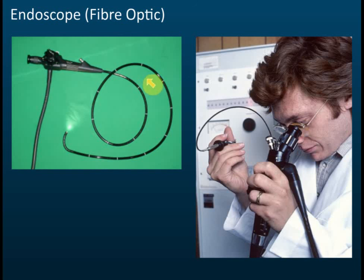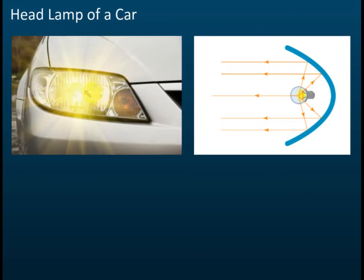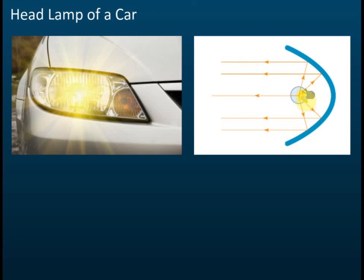Usually they won't ask you how it functions — in objective questions they just give you a list and ask which ones are applications of reflection of light, so endoscope is one of them. Car headlamps also use reflection: the lamp is placed at the principal focus, the light hits the reflector, and is reflected forward in parallel rays so it can reach further objects. This has appeared in past year questions asking about the location of the bulb.